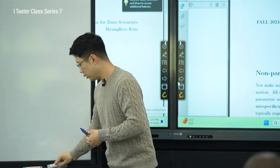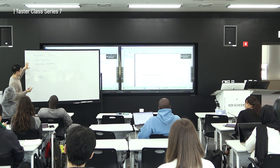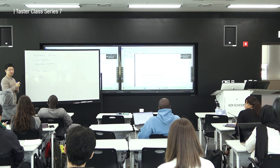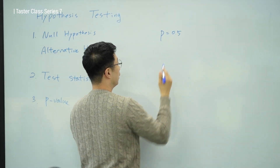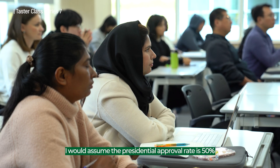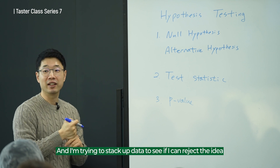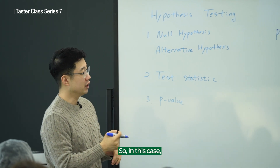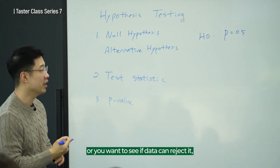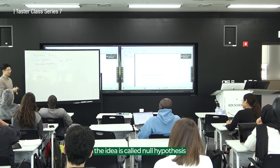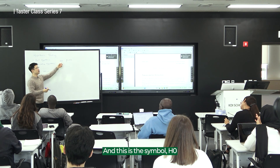The null hypothesis is something that you want to reject. In the previous example, I would assume that the presidential approval rate is 50%, and I'm trying to stack up data to see if I can reject that idea. The idea that you want to reject — or want to see if data can reject — is called the null hypothesis, denoted H0.